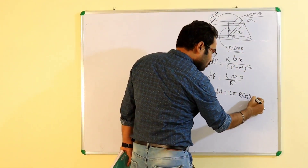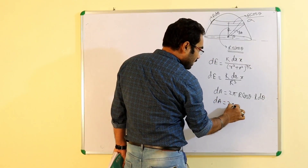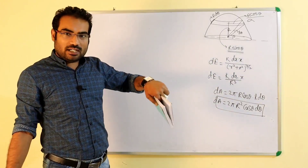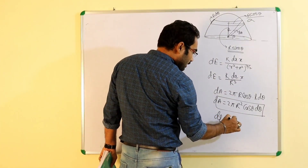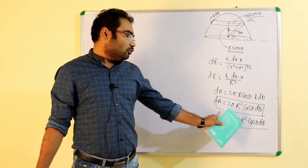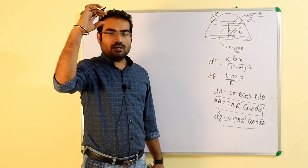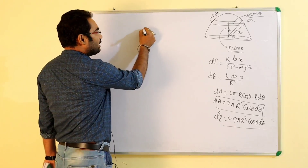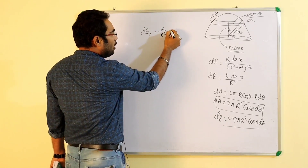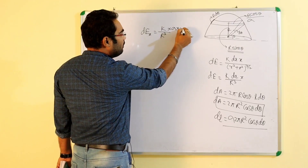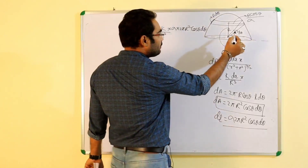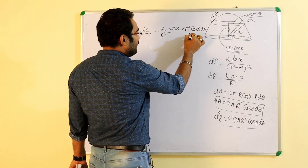Width kitna hai — R dθ hai — to dA ka value aa gaya: 2π R² cos θ dθ. Yeh dA aa gaya. Jab area aa gaya us strip ka, to charge asani se calculate ho jayega. dq ka value aa jayega sigma into dA = sigma into 2π R² cos θ dθ. To dE equals to: k by R³ into sigma into 2π R² cos θ dθ into R sin θ.